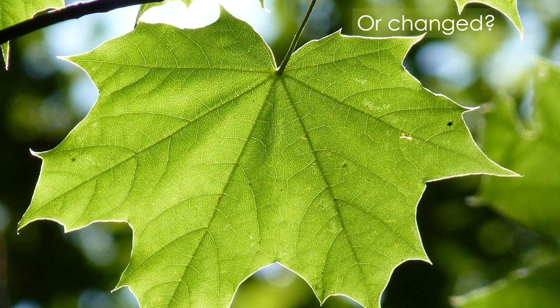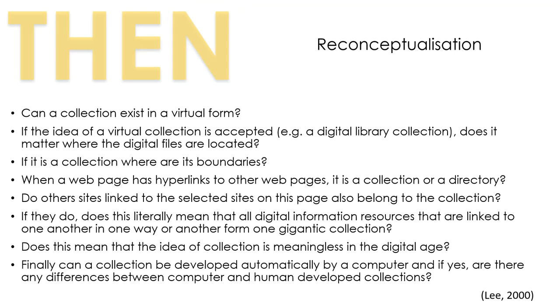We're no longer grappling with the print versus digital debate. Information organisations and the professionals that run them should have largely moved on from the debate around whether we should be collecting digital materials or print materials, or a mixture of both. Until quite recently, there had been significant debate around whether collections can actually exist in digital form — are e-journals part of the collection, what about websites? We've debated the nature of digital collections, including where the boundaries lie, whether it matters if the collection is stored locally or somewhere else, and the impact of hyperlinking within digital collection materials on the boundaries of the collection, whether collections of links are collections or gateways, among many other issues. We've moved on now from many of these questions.